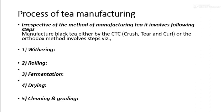Processing of tea: the process of manufacturing tea, irrespective of the method, involves the following steps. Manufacturing of black tea is either by CTC, that means crush, tear and cut, or the orthodox method, which involves withering, rolling, fermentation, and drying.